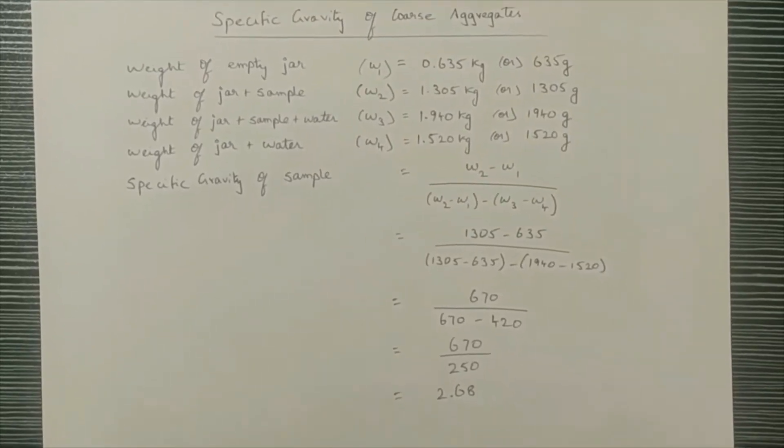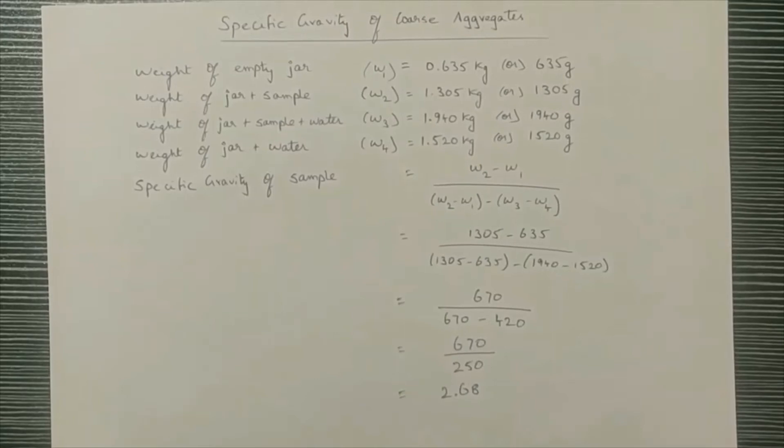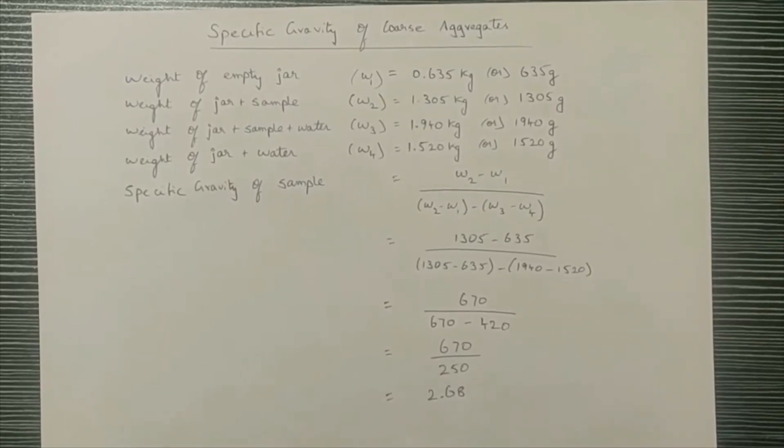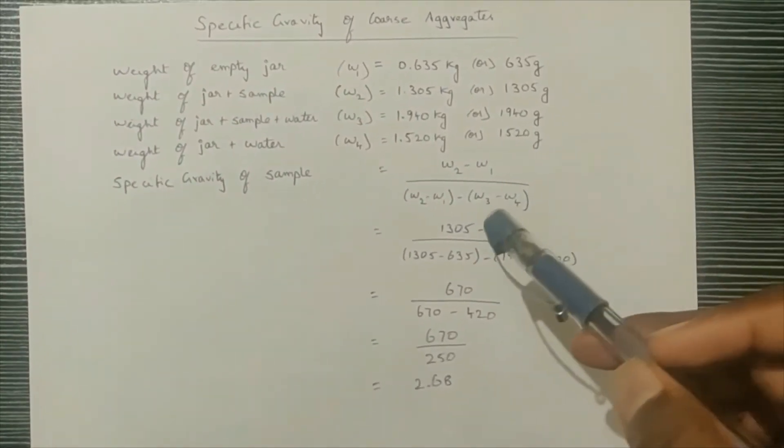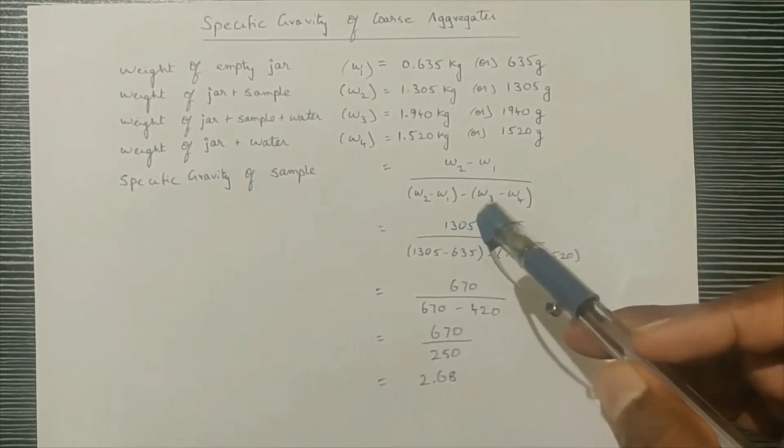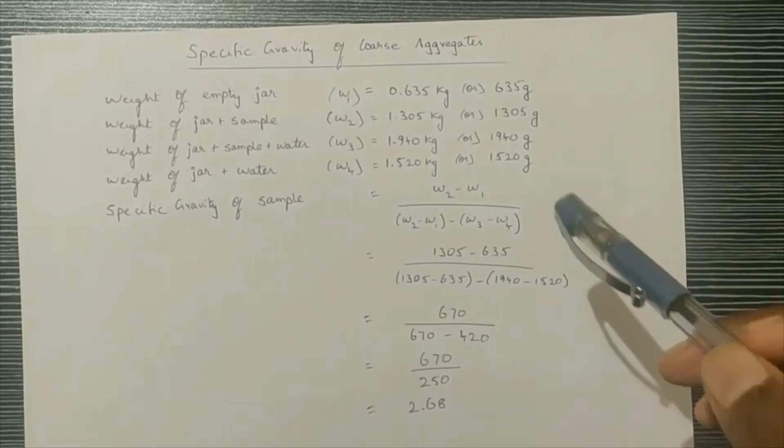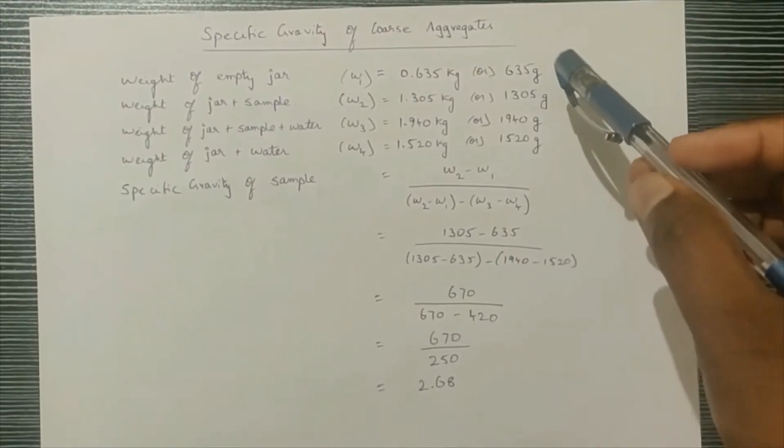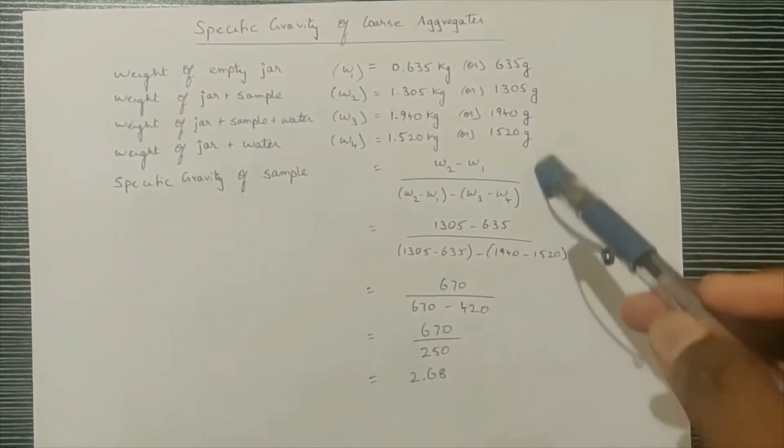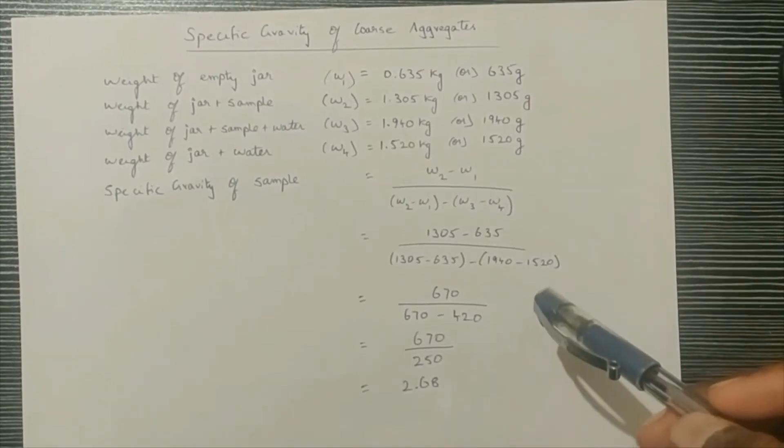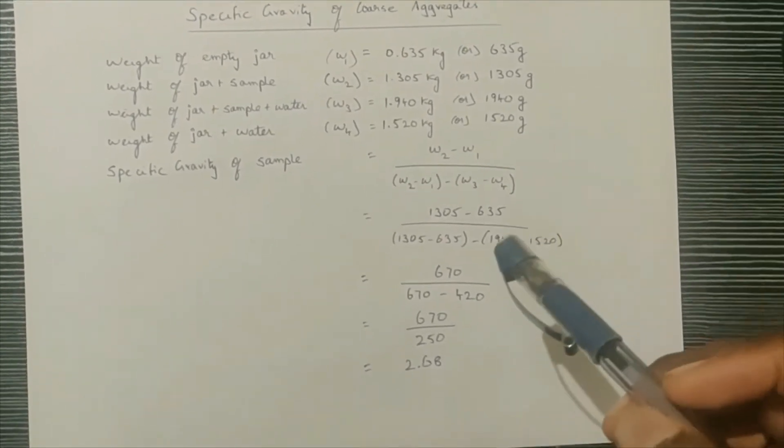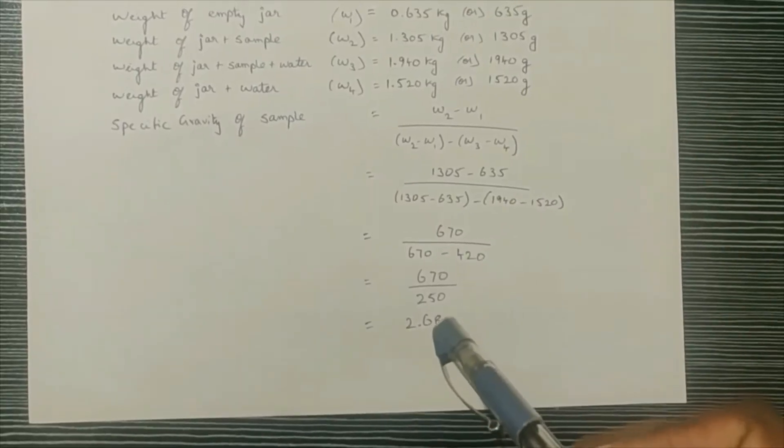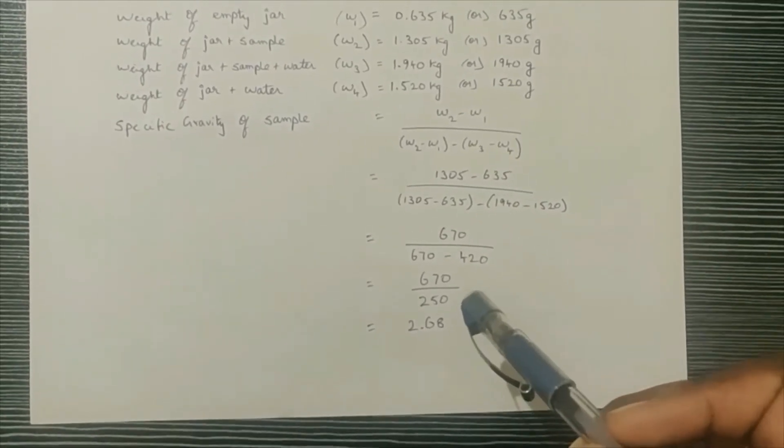Now let us see the calculation for determining the specific gravity of coarse aggregates. The formula for specific gravity is (W2 - W1) divided by (W2 - W1 - (W3 - W4)). W2 is 1305 grams, W1 is 635 grams, W3 is 1940 grams, and W4 is 1520 grams. Substituting these values, we get 670 divided by 250, and the final answer is 2.68.